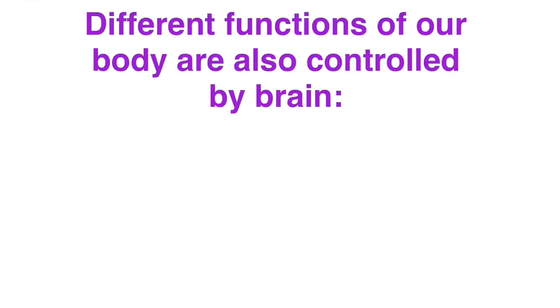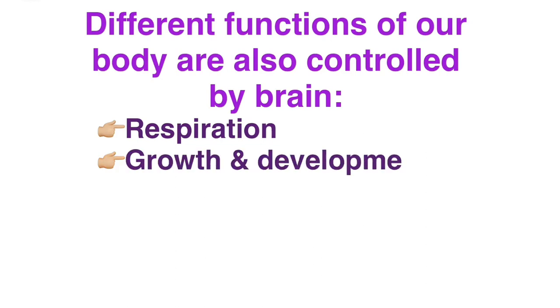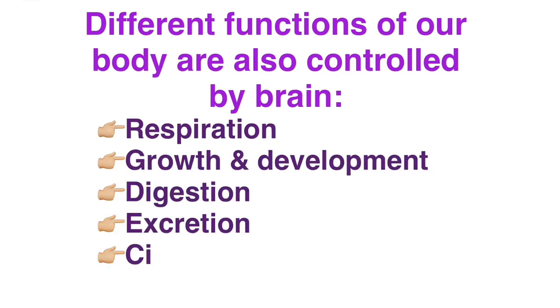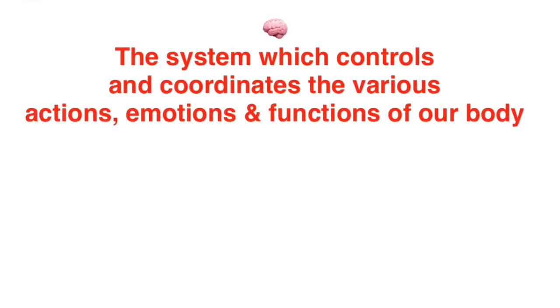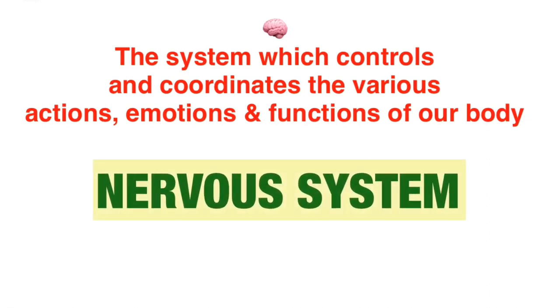The different functions performed by our body, like respiration, growth and development, digestion, excretion, circulation, reproduction, etc., are all controlled by the brain. So the system which controls and coordinates all the actions, emotions, and functions of our body is called the nervous system.